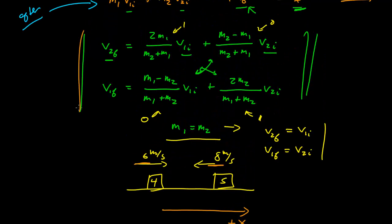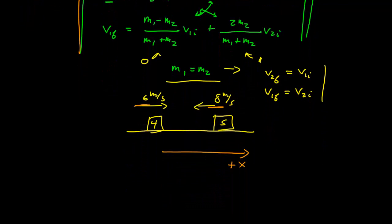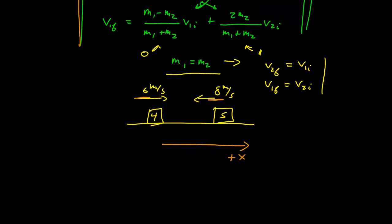Now I can just go ahead and use these, and I have all the information, and I can calculate my final velocities. My final velocity of 1 is equal to, let's see, (m1 - m2)/(m1 + m2), so that's (4 - 5)/9, times the initial velocity of 1, that was 6. So this is plus 2 times mass 2, so that's 2 times 5, over the sums of the masses, which is 9, times the velocity of 2, which is negative 8 in this coordinate system.